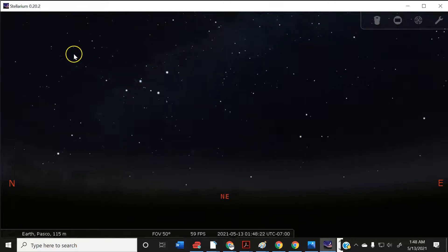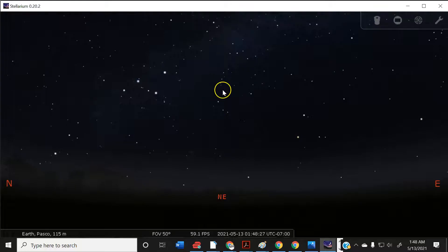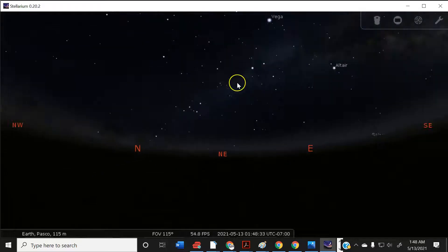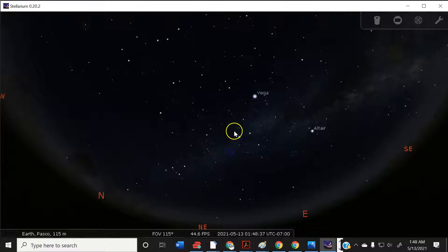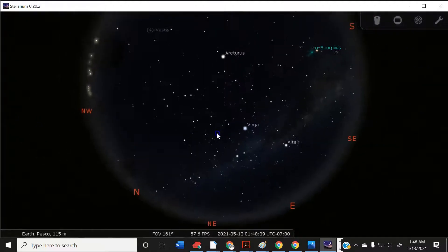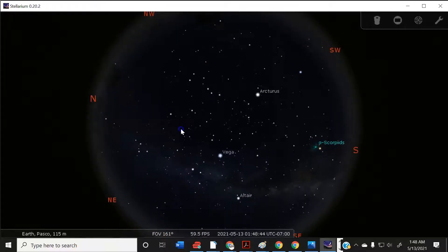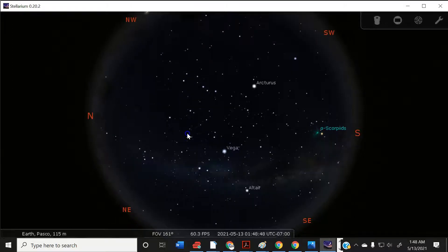The program that I'm using right now is called Stellarium. Stellarium can do interesting things with the night view. I can zoom out where I can see more of the sky at once, and I can pretend that I'm laying on my back with my head towards the west.